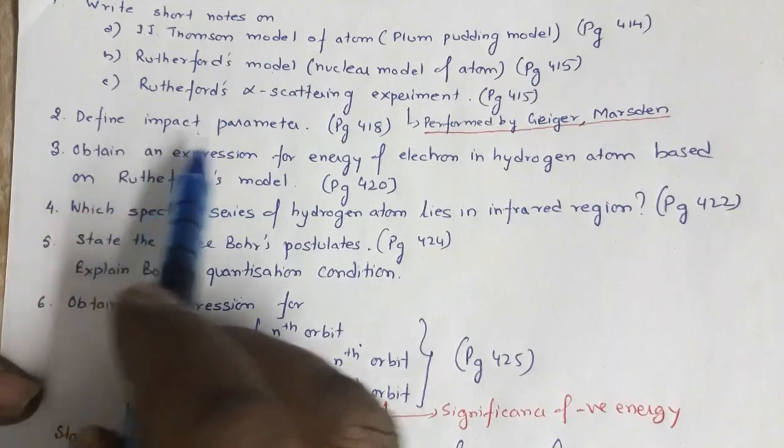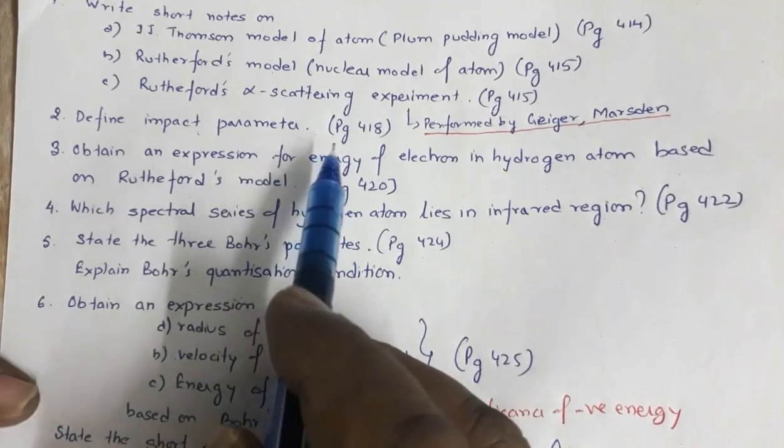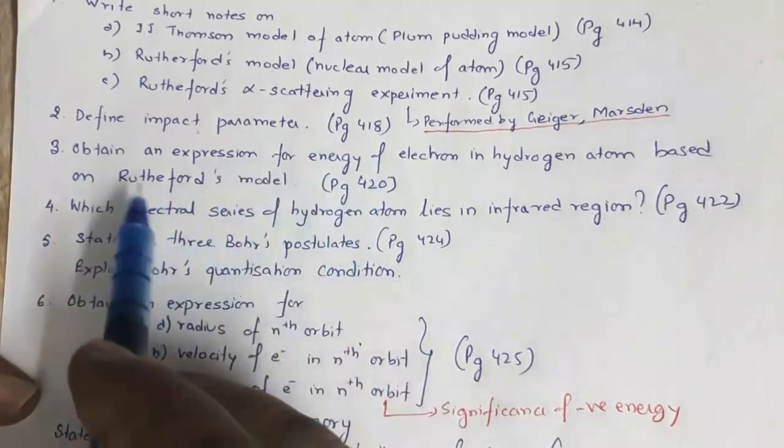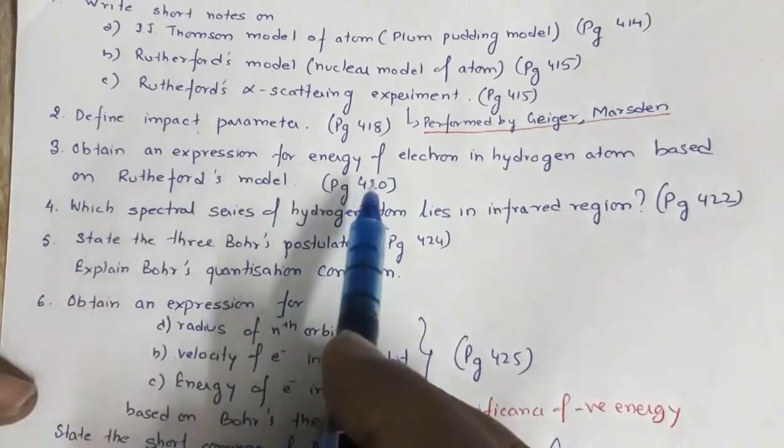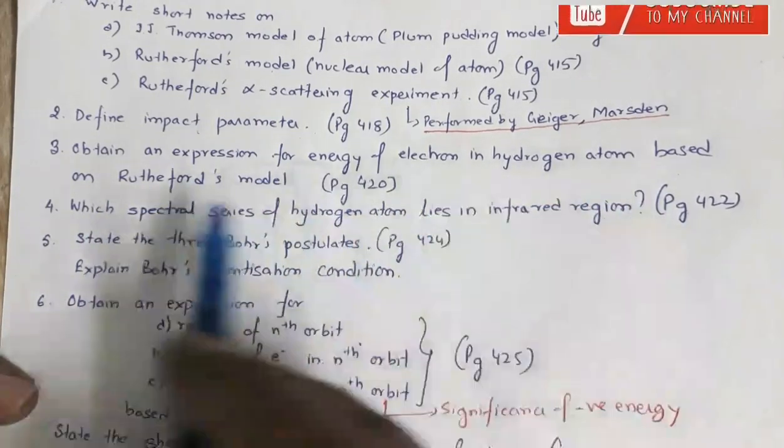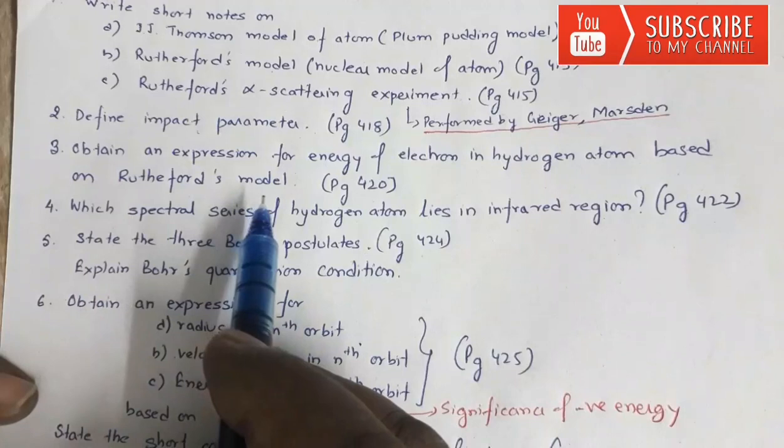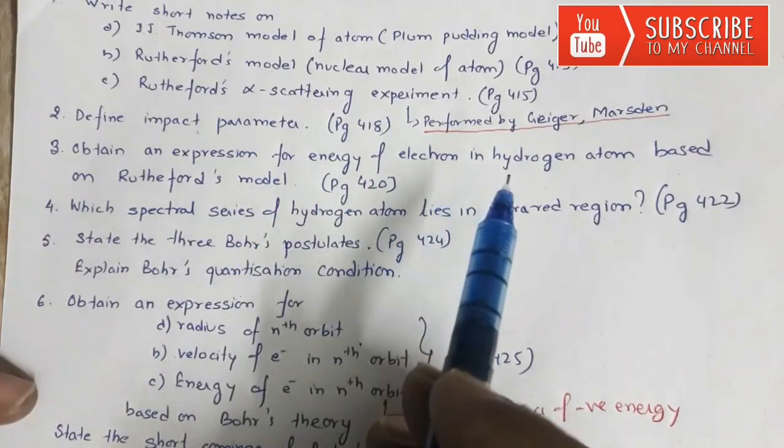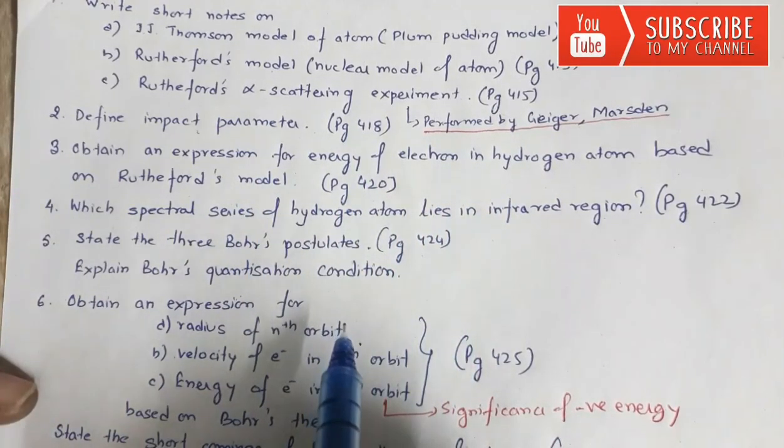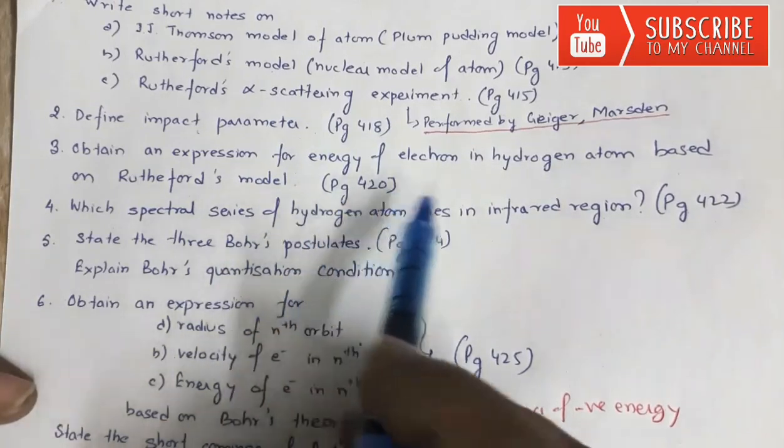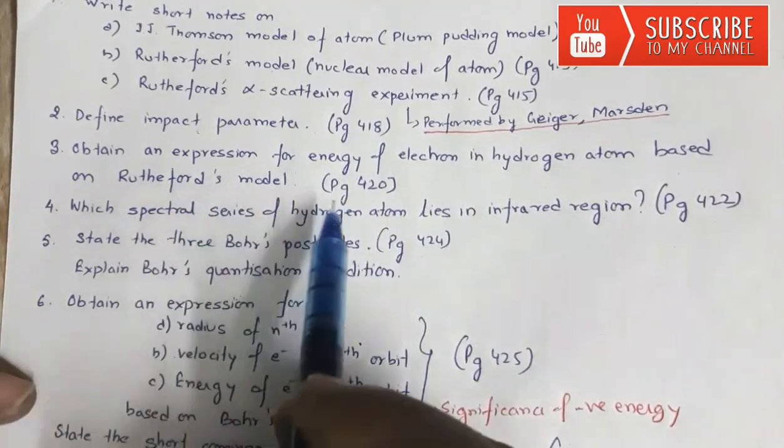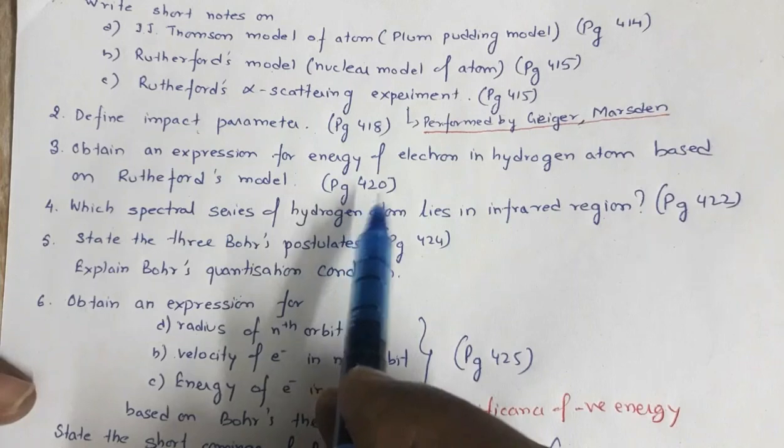Next is define impact parameter. This is given in page number 418. Obtain an expression for energy of electron in hydrogen atom based on Rutherford's model. Now expression of energy of hydrogen atom in Bohr atom model is also there, but this derivation may also be asked based on Rutherford's model. So this is given in page number 420.